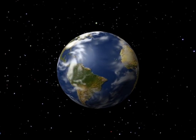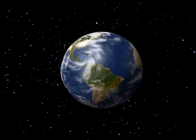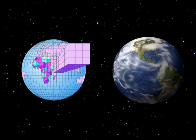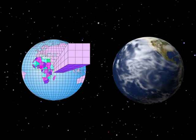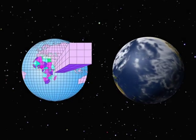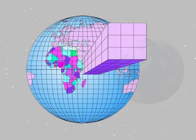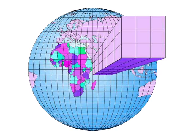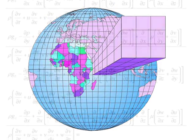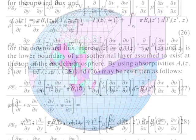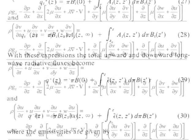A climate model is like a virtual earth. It's designed to mimic the real world so that scientists can project future climate scenarios. Climate models are composed of computerized representations of components that represent the atmosphere, ocean, sea ice, land surface, and other processes. Climate models do not rely on guesswork — they describe the climate system with mathematical equations based on laws of physics and solved with sophisticated computers.